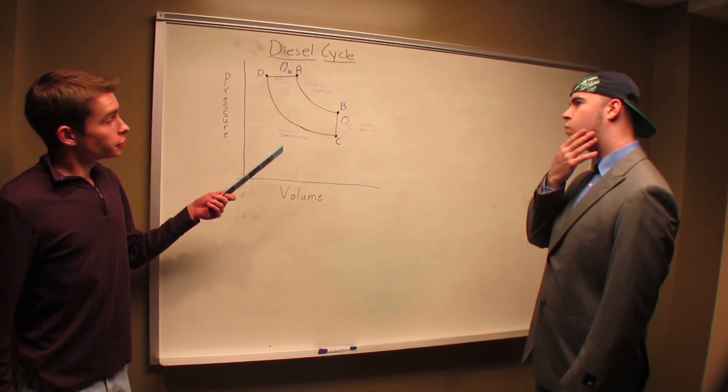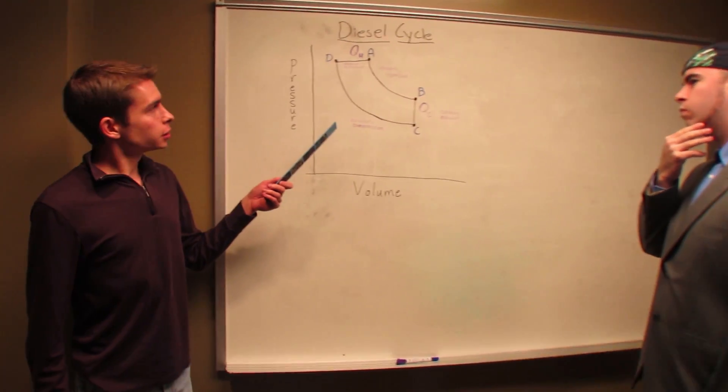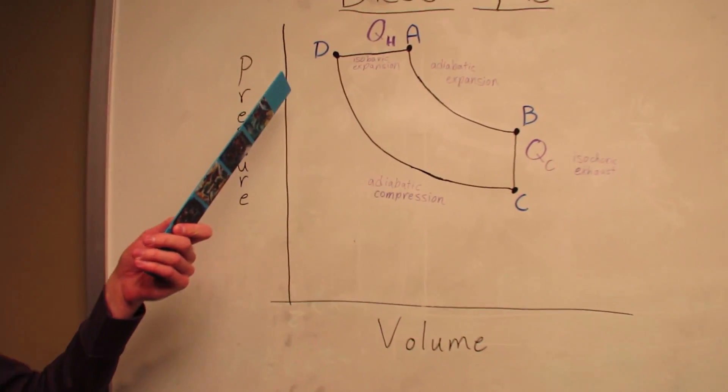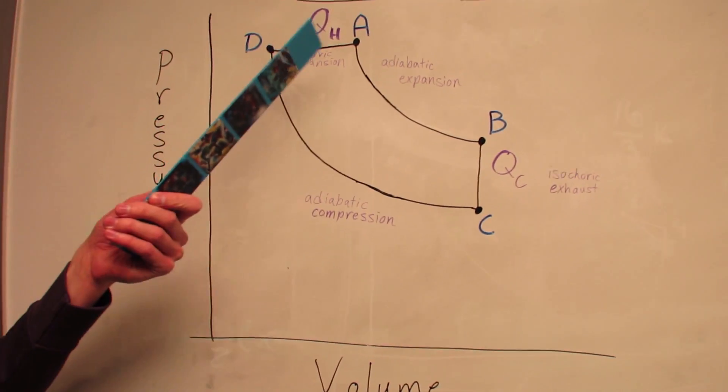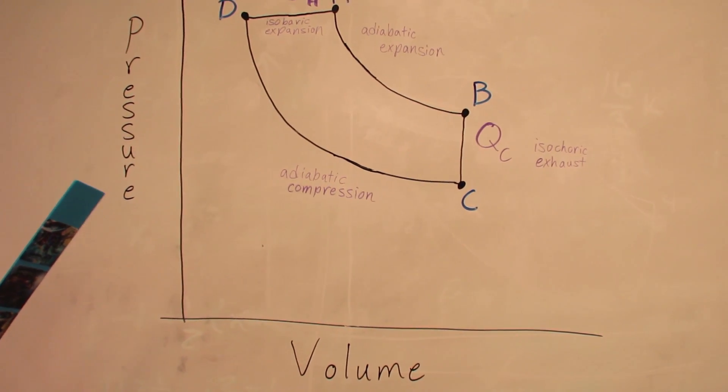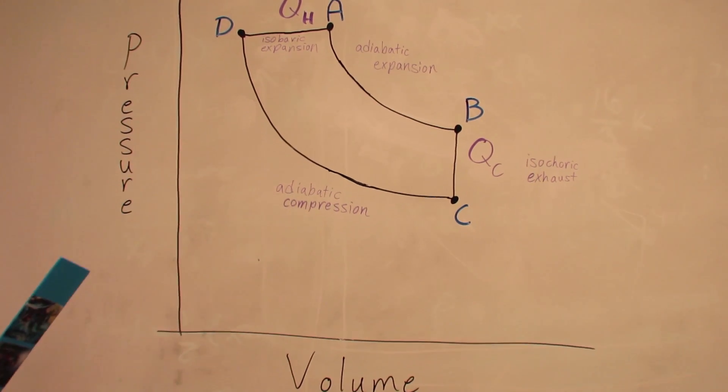We can divide the diesel cycle into four stages. The first, from C to D, we have adiabatic compression. This is where we put work into the system. Next, from D to A, we have isobaric expansion. This is where we inject diesel fuel, and the auto-ignition produces heat, or QH, which is our hot reservoir.